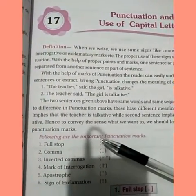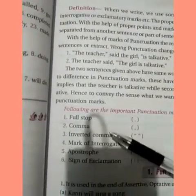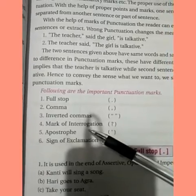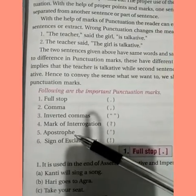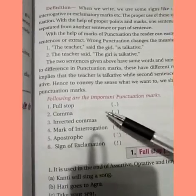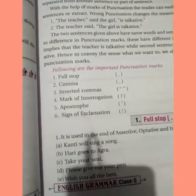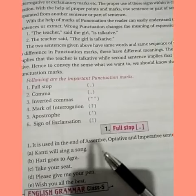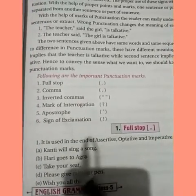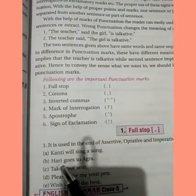Sentences are classified according to their punctuation signs, like full stop, inverted comma, mark of interrogation, apostrophe, and sign of exclamation. When a sentence starts as a declarative sentence — like 'Kanti will sing a song' — it simply states something.